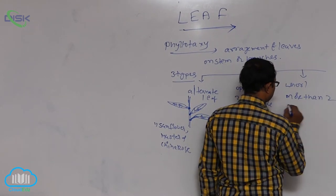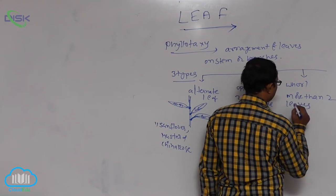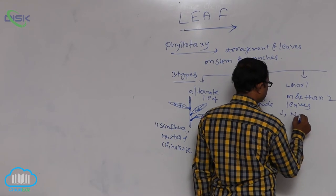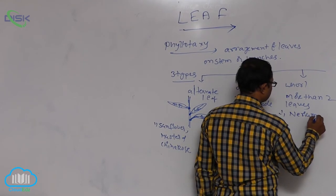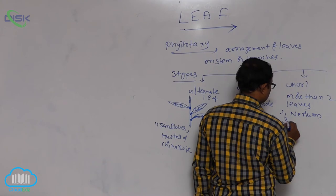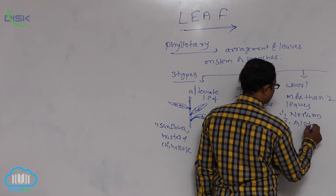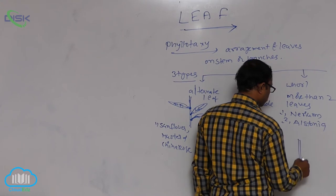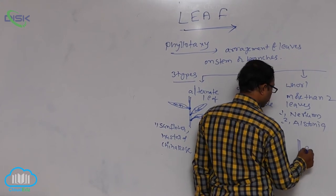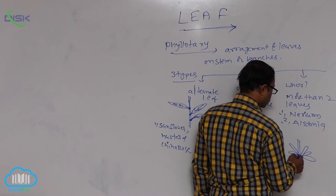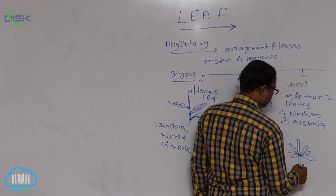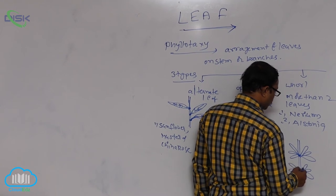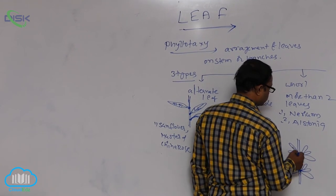In whorled phyllotaxy, more than two leaves are present at every node. Examples are Nerium and Alstonia, both of which are examples of whorled phyllotaxy. At every node, more than two leaves are formed.